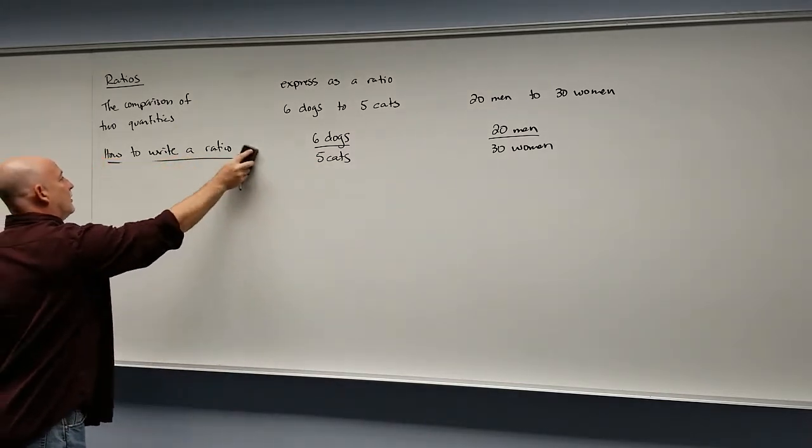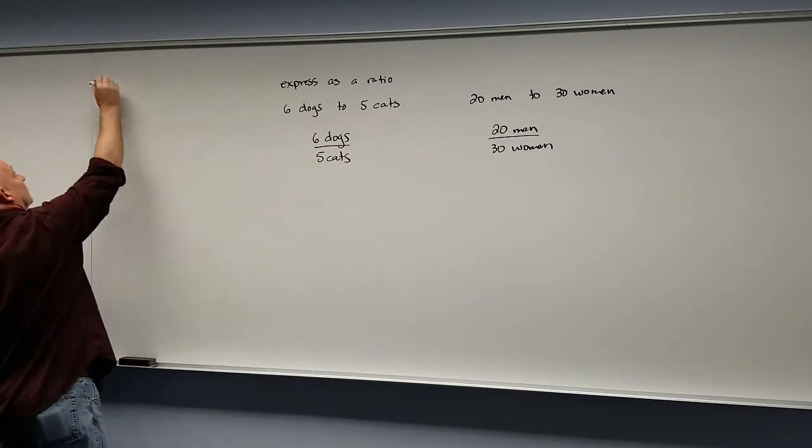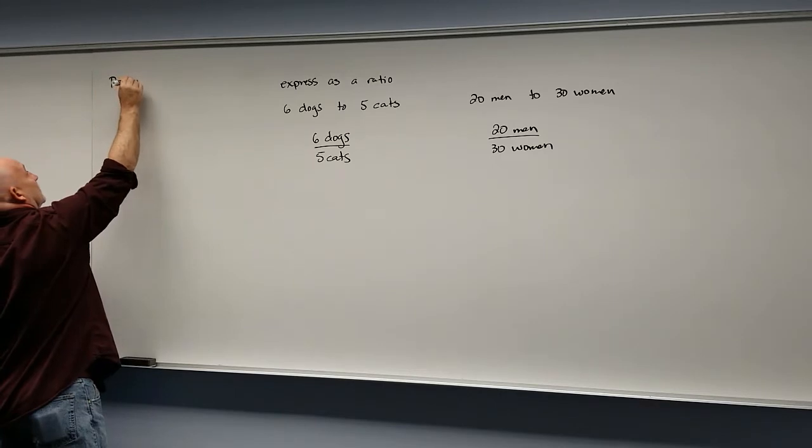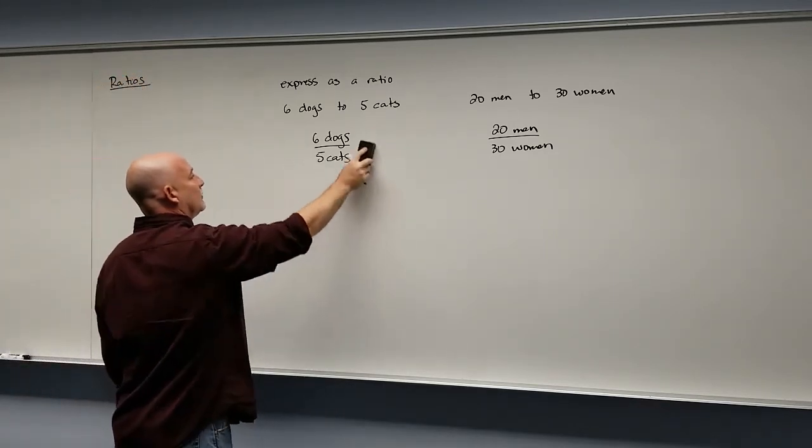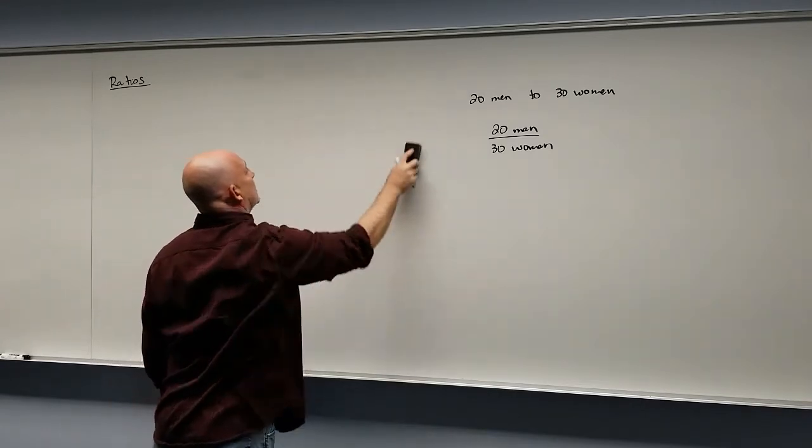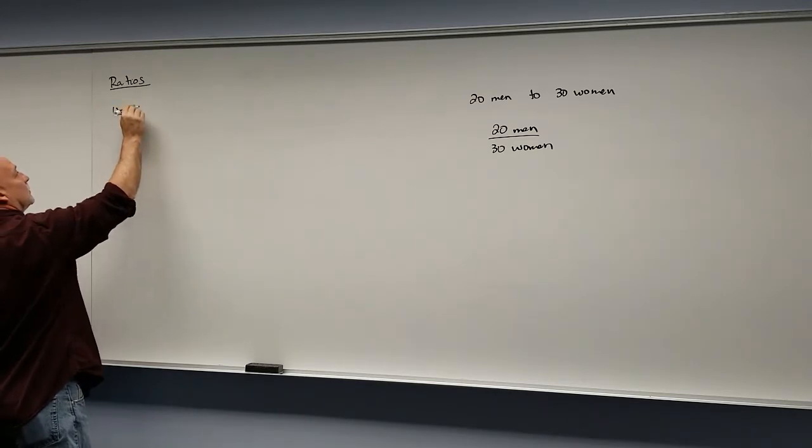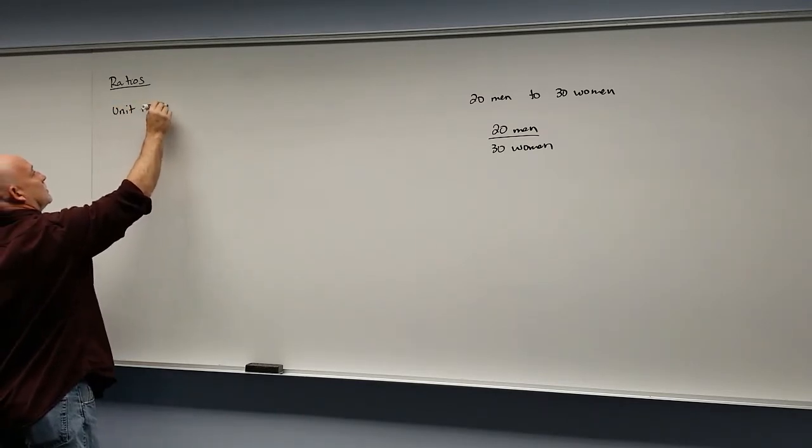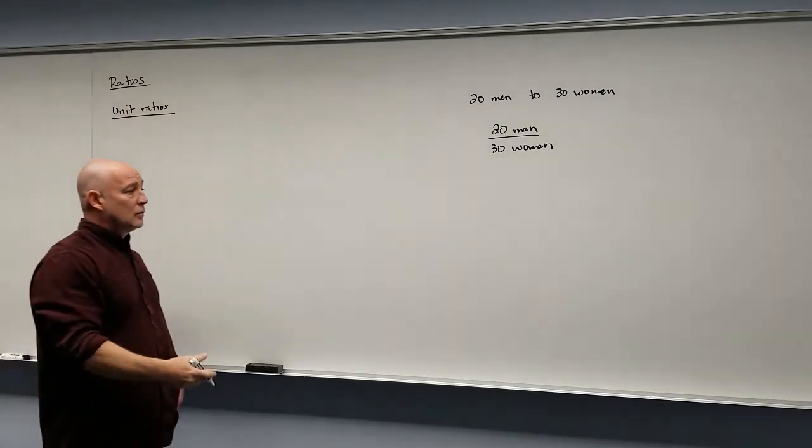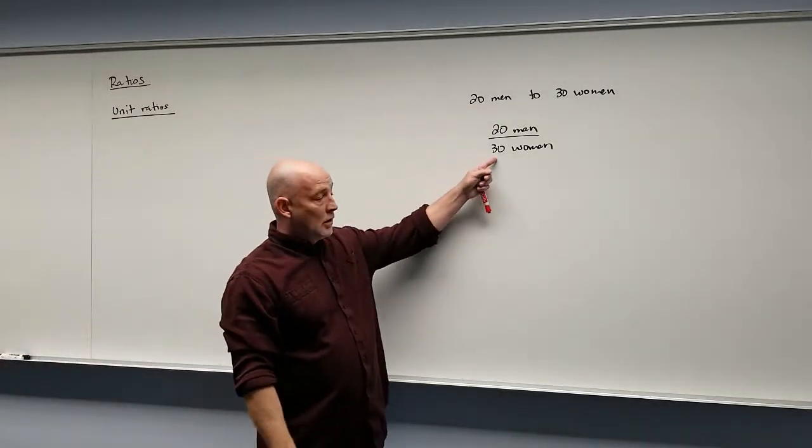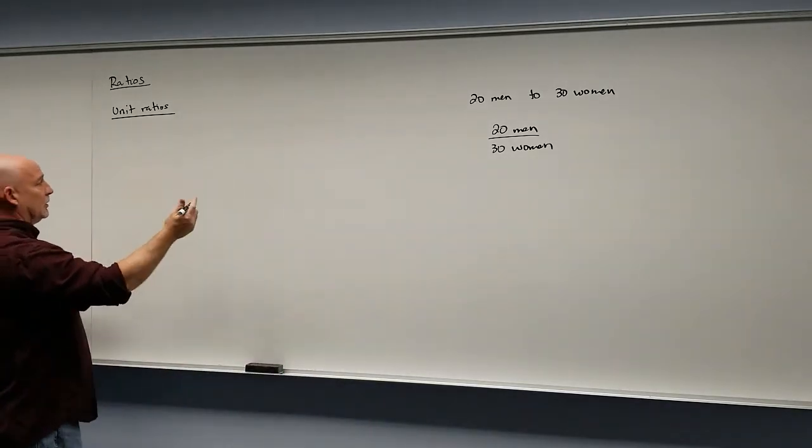Now ratios are very nice. You can kind of see the comparison of two quantities. But more often than not, writing something as a unit ratio is a little bit nicer. Now what do I mean by a unit ratio? Well, a unit ratio means there's only going to be the number one on the bottom. So let's say, kind of like a real-life example...